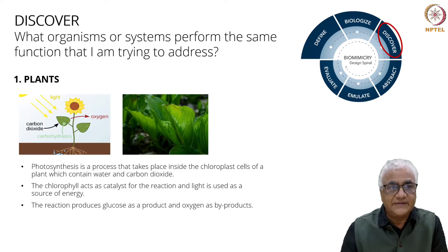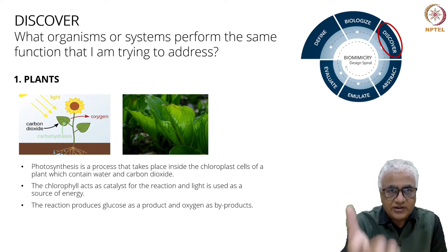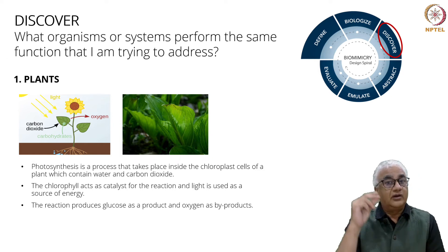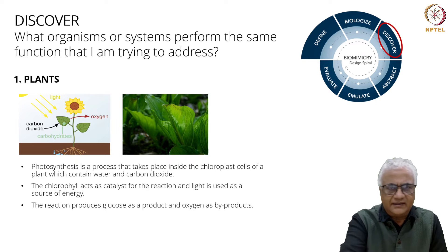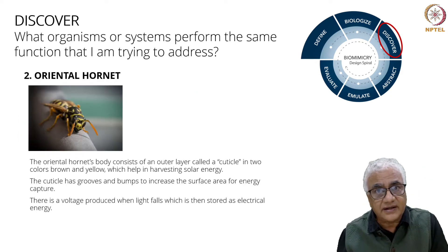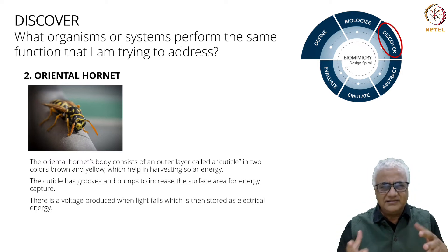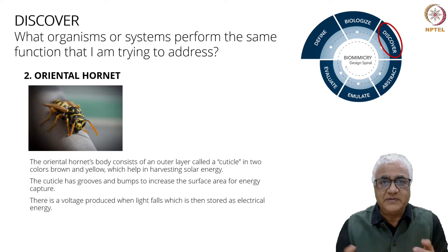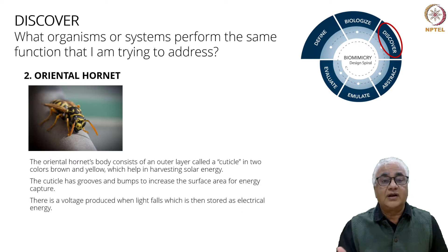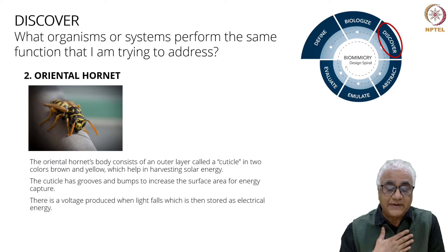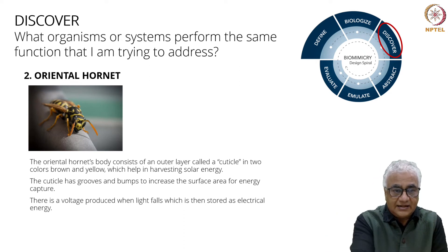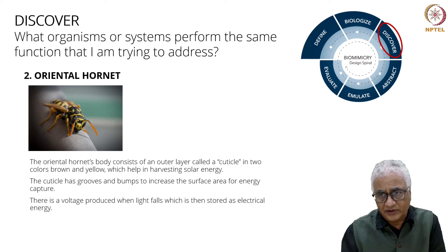What does he do next? He does discover. He goes to asknature.org and looks at organisms that perform the same functions he wants to accomplish. He looks at plants and what plants do, and says the plants also do what he wants to accomplish. Then he chooses the oriental hornet — the oriental hornet. It's so beautiful. Right in front of our eyes, a problem is being solved, and that is the beauty of biomimicry. The oriental hornet accomplishes some of the functions he's trying to accomplish.